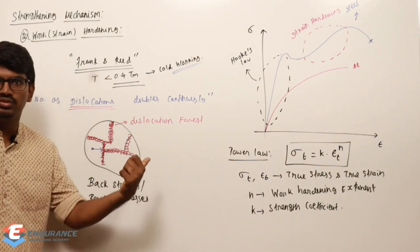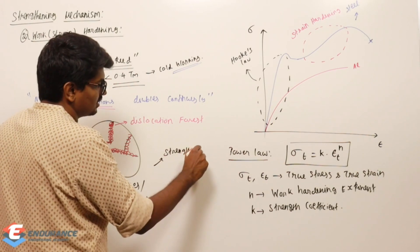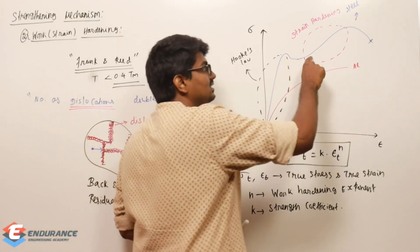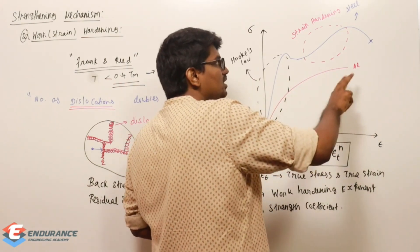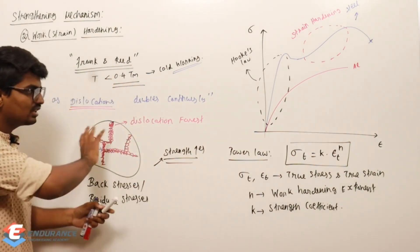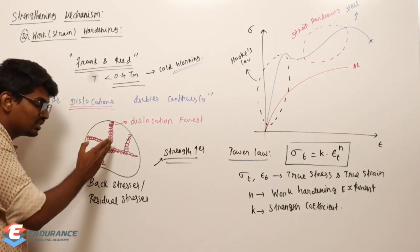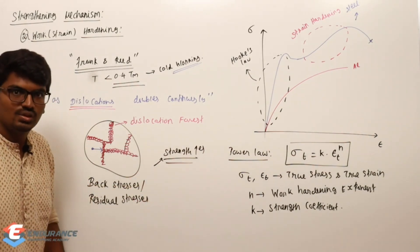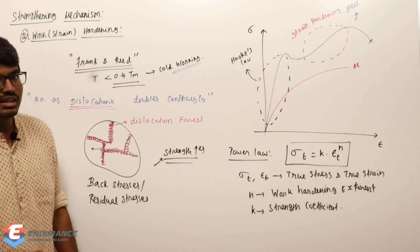The dislocation forest itself acts as an obstacle for dislocation motion — it does not allow dislocations to move freely. This increases the strength, which is why more load is needed for deformation. Without the dislocation forest, dislocations would move freely, yielding would occur, but the dislocation forest prevents that.